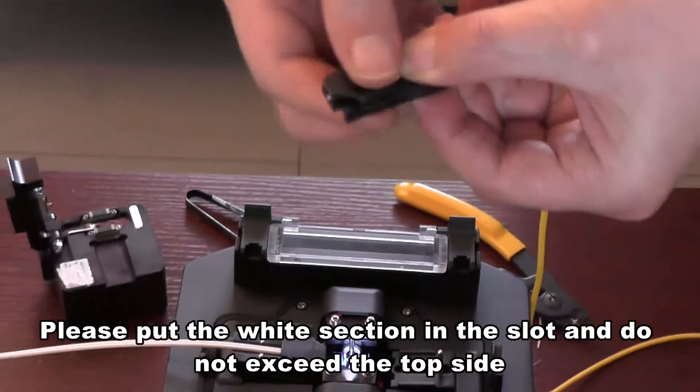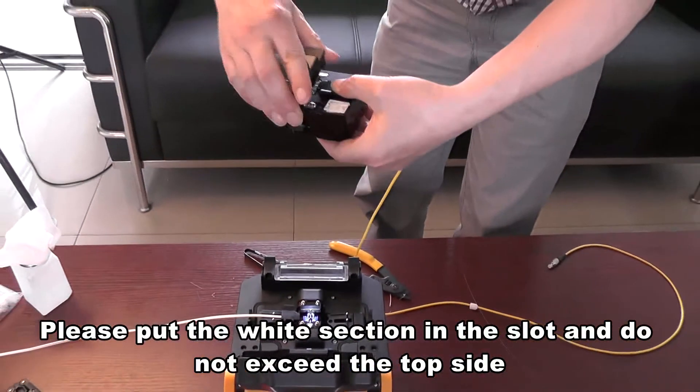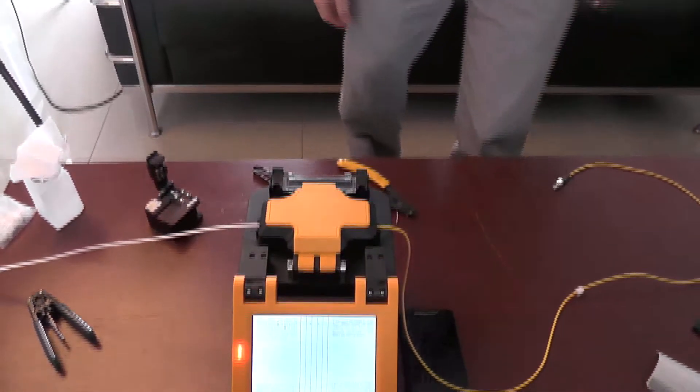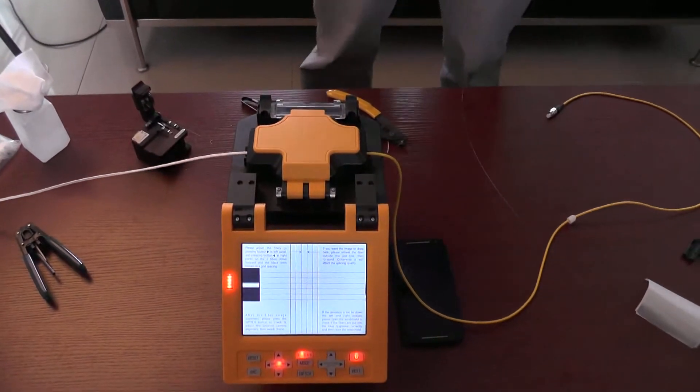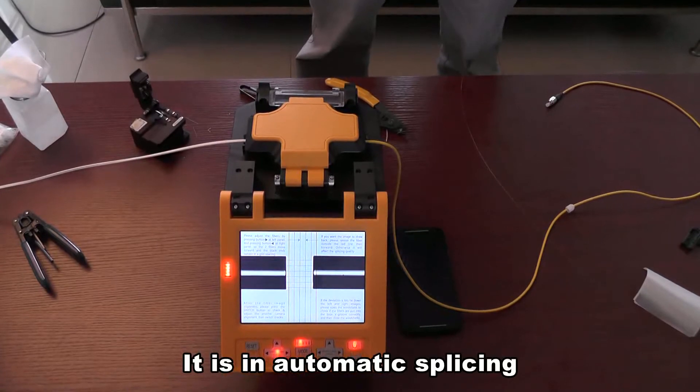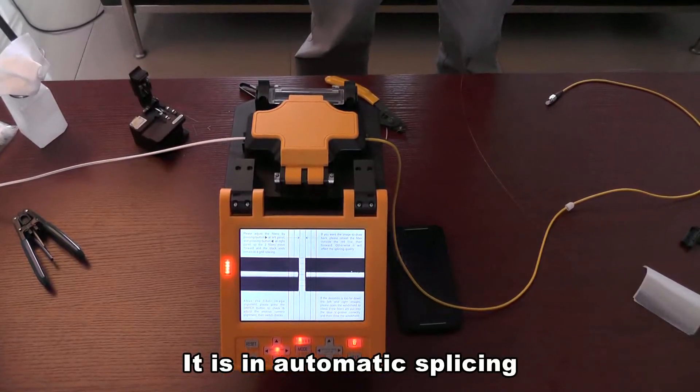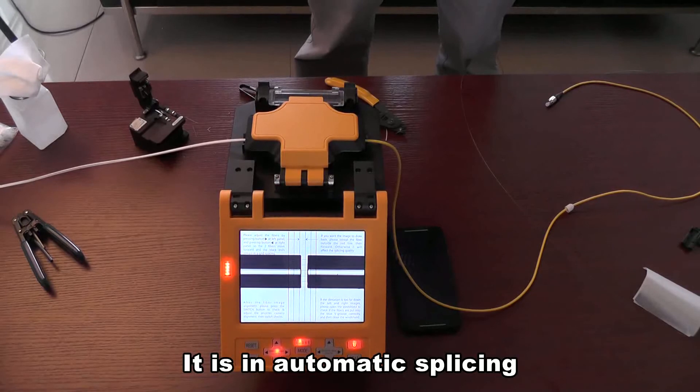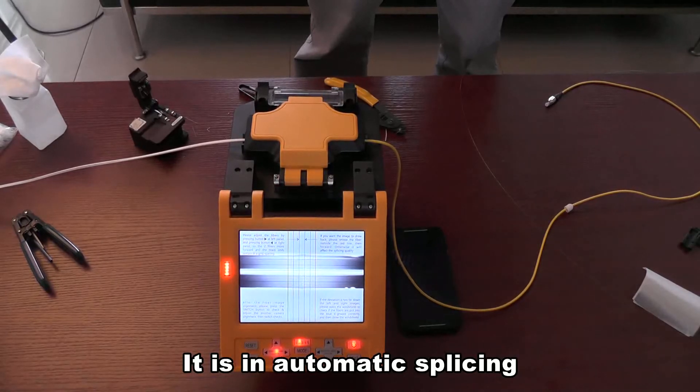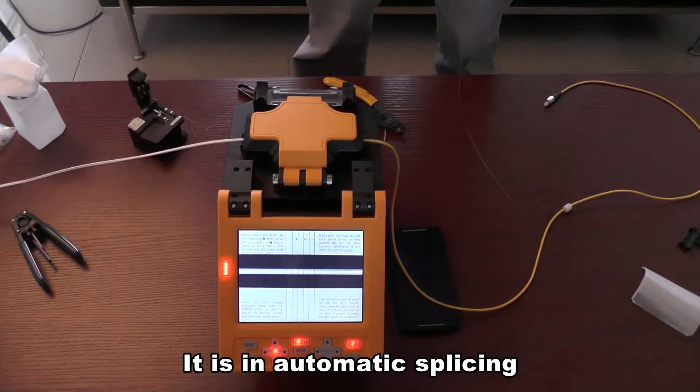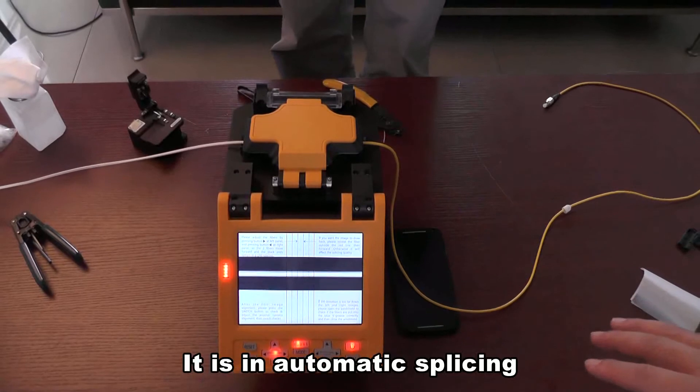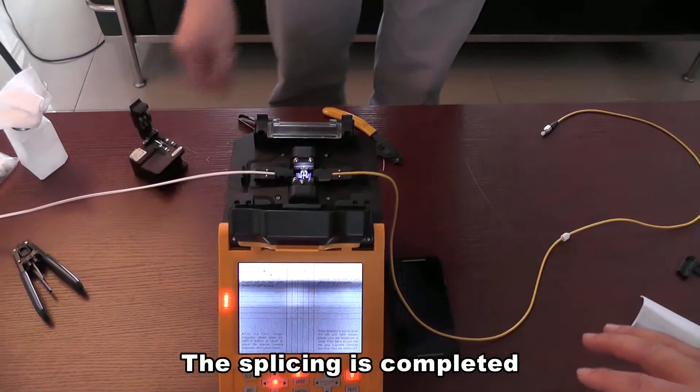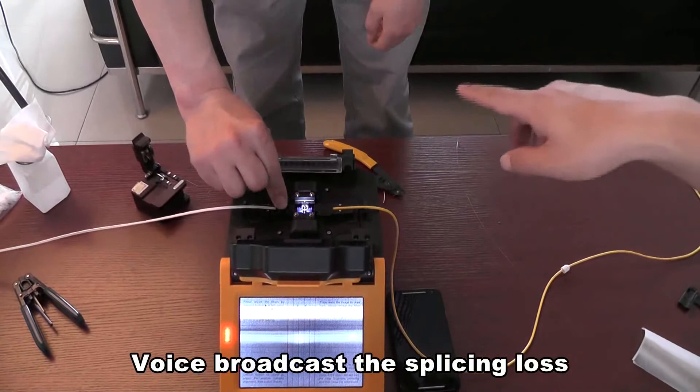Please put the white section in the slot and do not exceed the top side. Please read the operation guide for fiber holders for details. It is in automatic splicing. The splicing is completed. Voice broadcast the splicing loss.